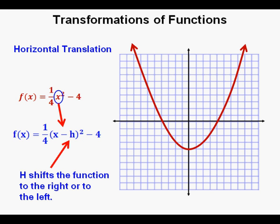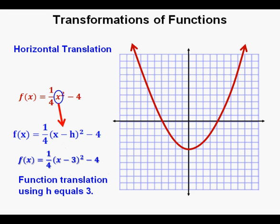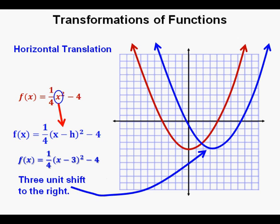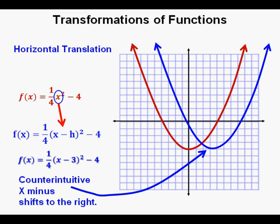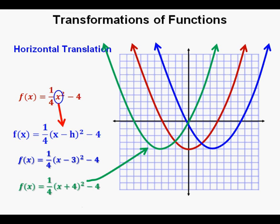It's the value of h that shifts or translates the function to the right or to the left. If we let h equal 3, the function looks like 1 fourth quantity x minus 3 squared minus 4. Here's the new function in blue, translated 3 units to the right from the original. This is the least intuitive concept: x minus shifts the function to the right, and x plus a number inside parentheses shifts the graph to the left — the green parabola is 4 units to the left.